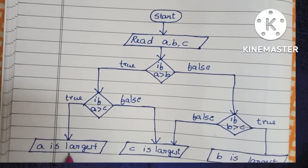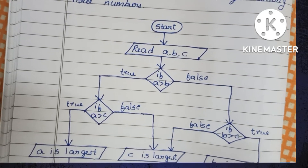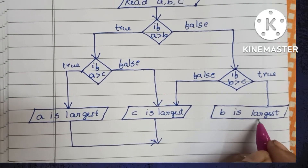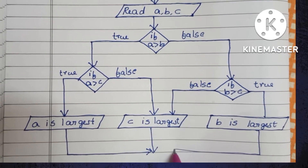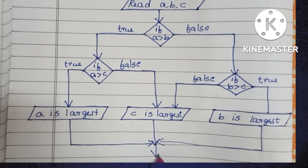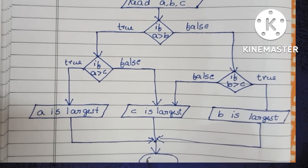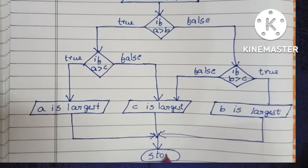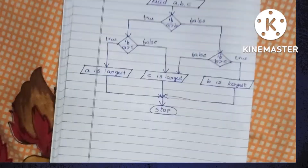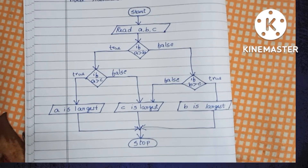Next, we have to connect all these outputs with the stop statement. The stop statement is written within an oval shape. This is the flowchart to find the largest among three numbers.